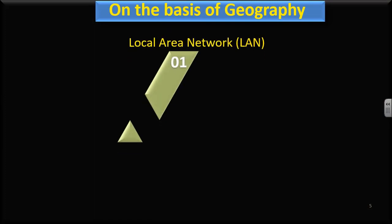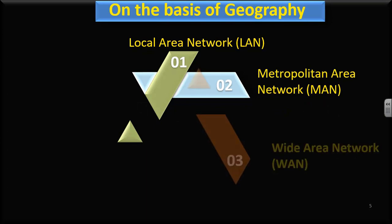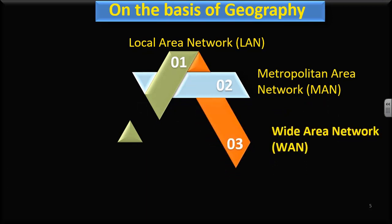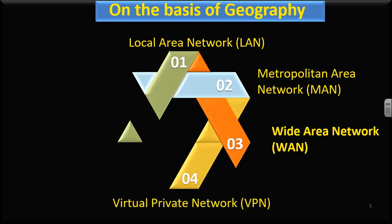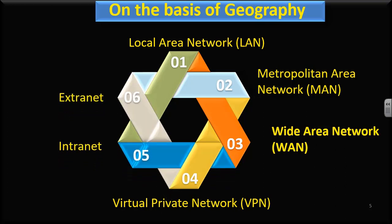On the basis of geography, we have local area network LAN, metropolitan area network MAN, wide area network WAN, virtual private network VPN, intranet, and the last one is extranet. All these are on the basis of geography.